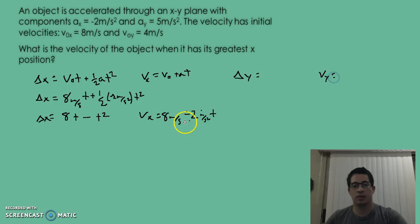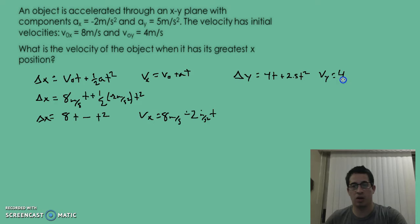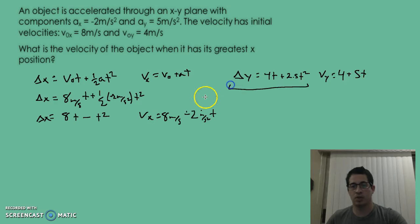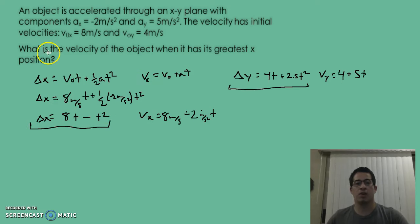For the y functions: the y-position function gives 4t plus 2.5t squared, and the y-velocity function gives 4 plus 5t. For now, we're just going to focus on the position functions and model them, then talk about finding the velocity when the object has its greatest x position.